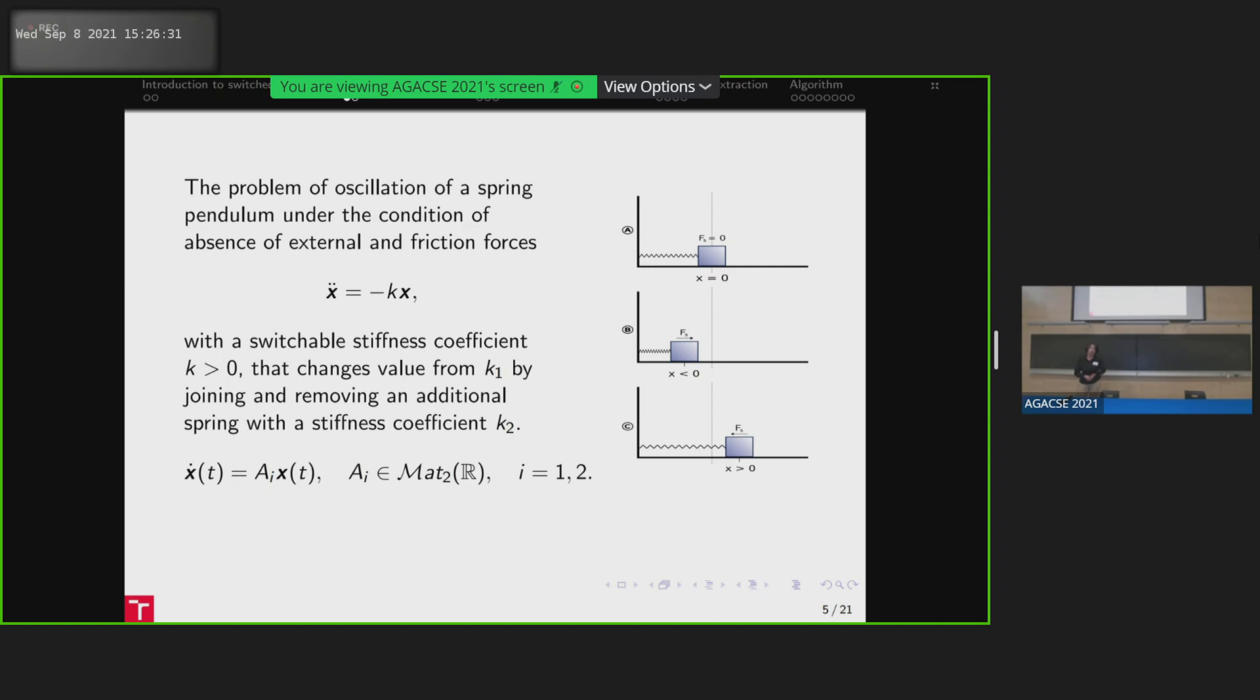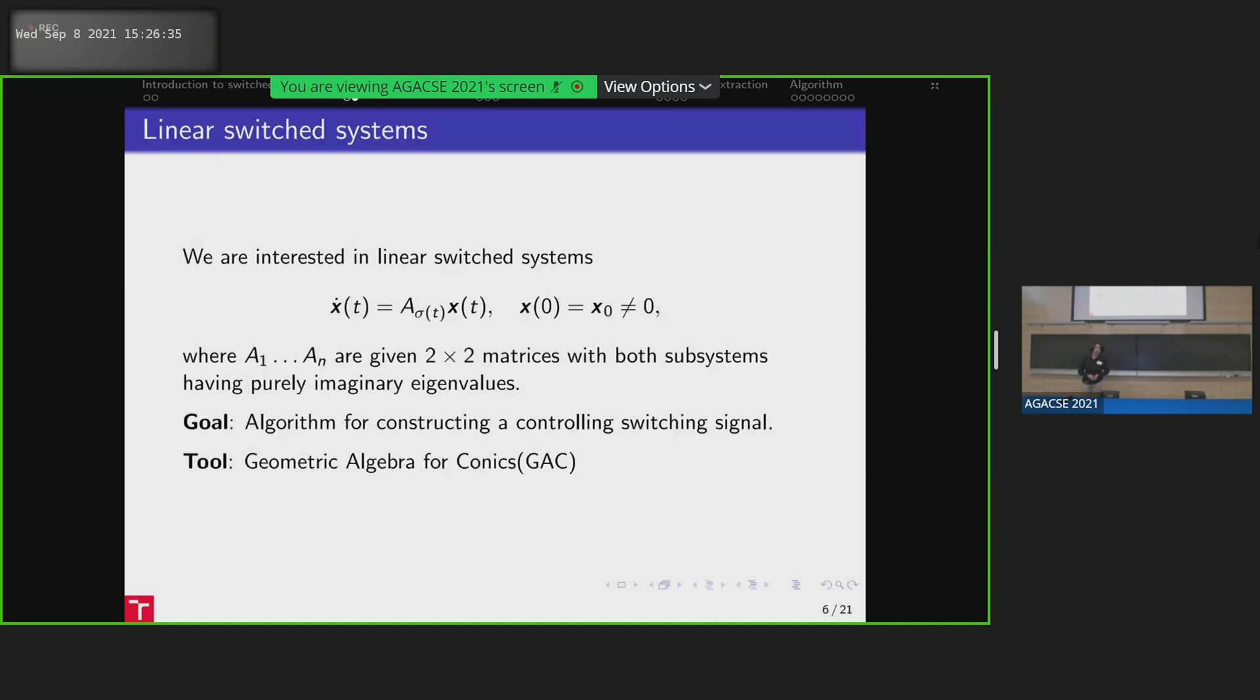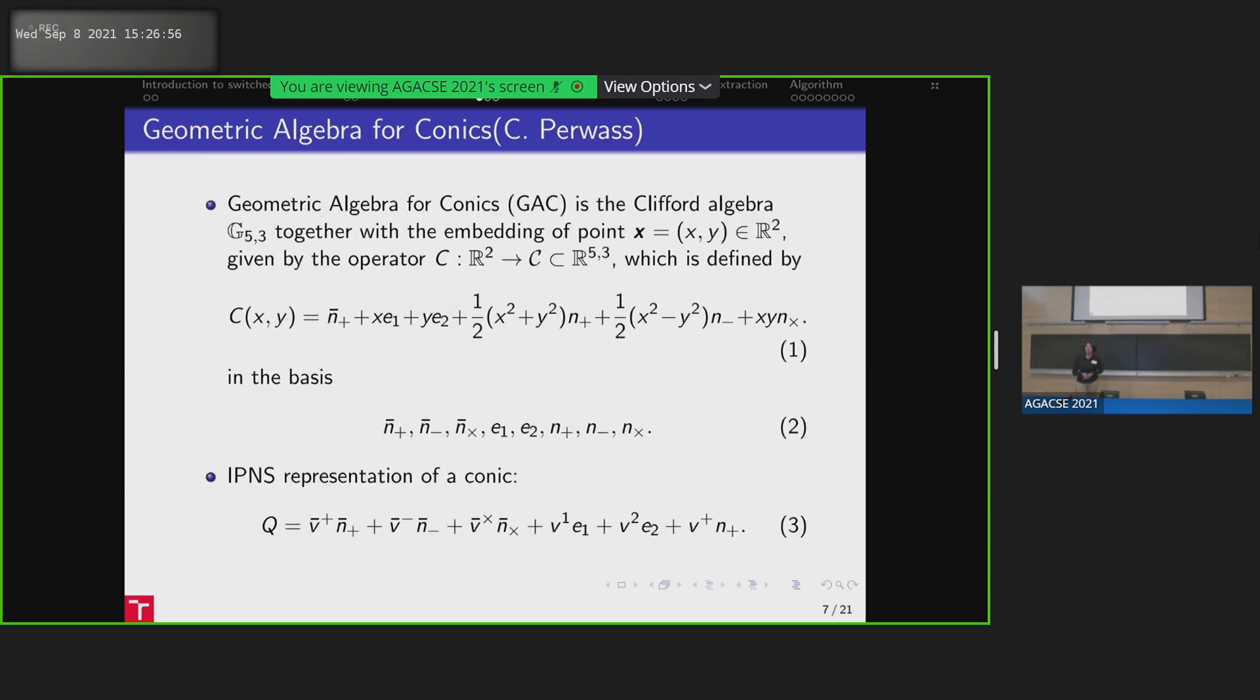So we come to the problem of controllability of switch linear dynamical systems. So instead of function f you have set of matrices. So linear switch systems. We are interested in the algorithm which will allow us to get from one point to the other one. And we figured out that we have a brilliant tool for that.